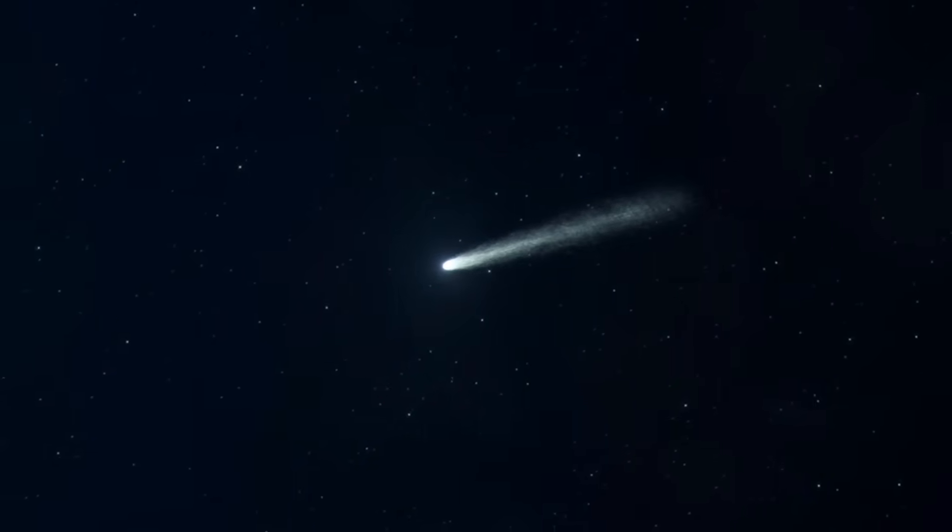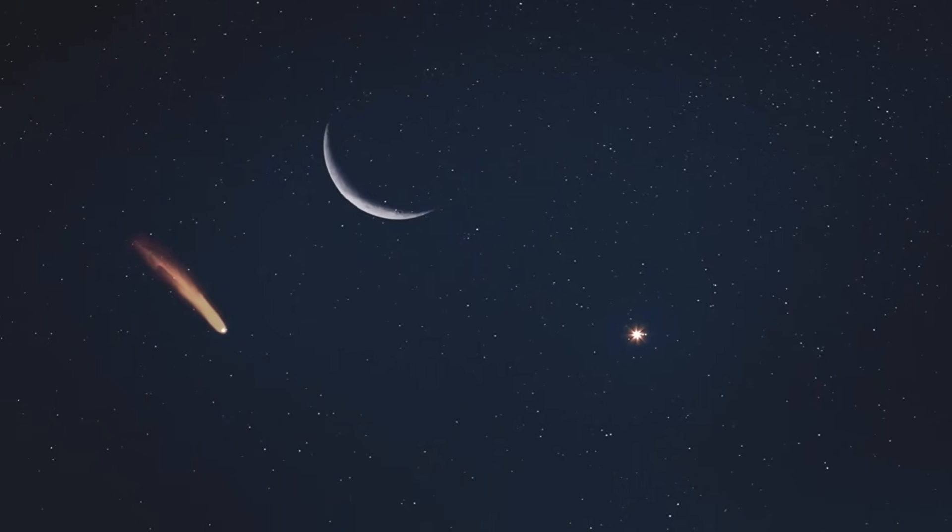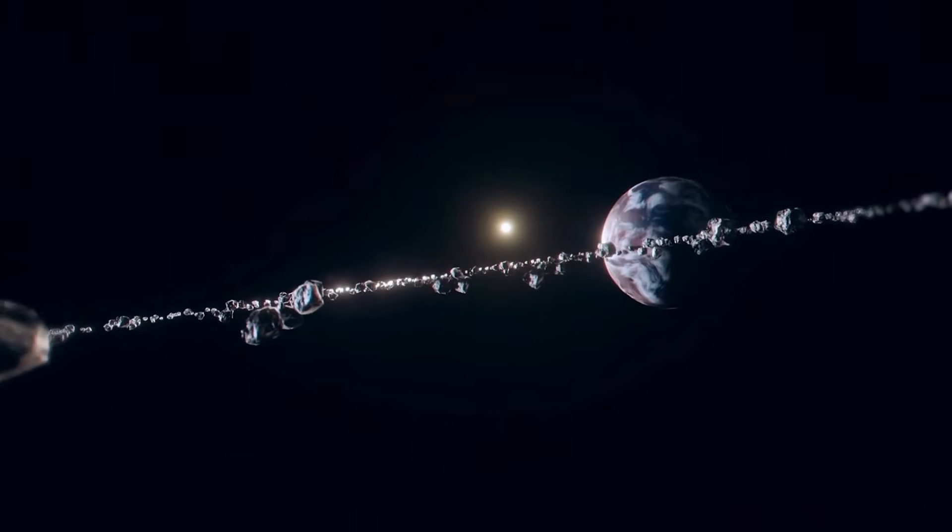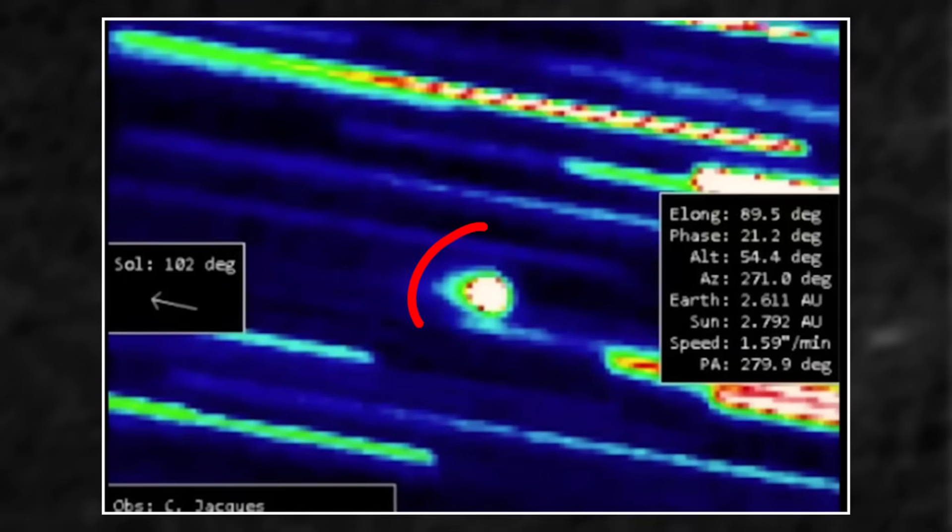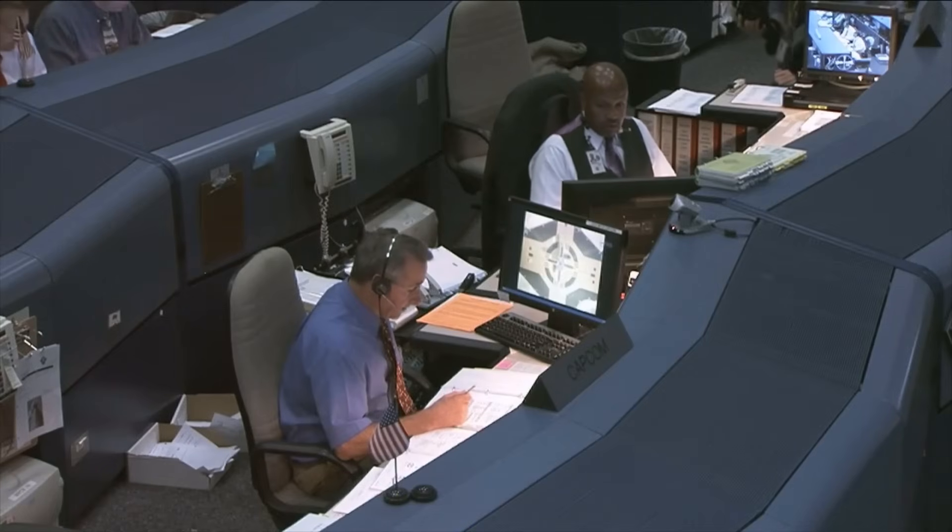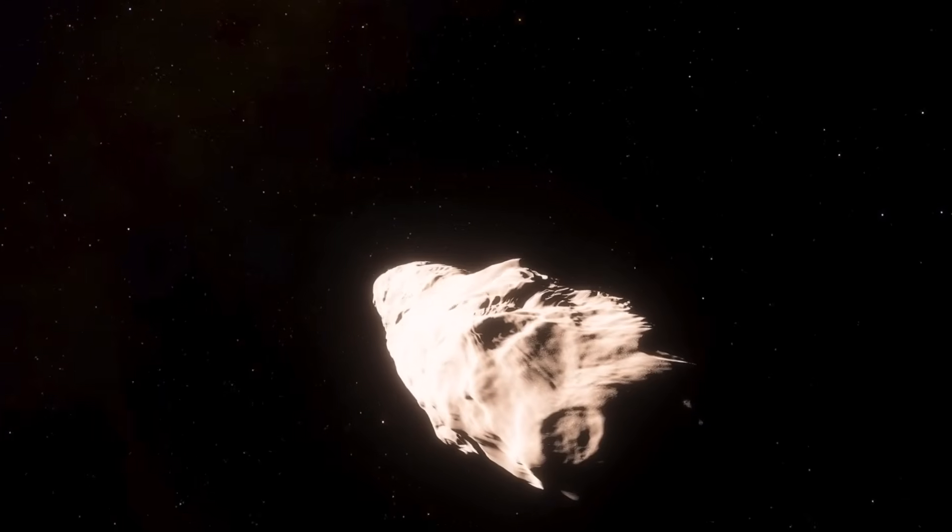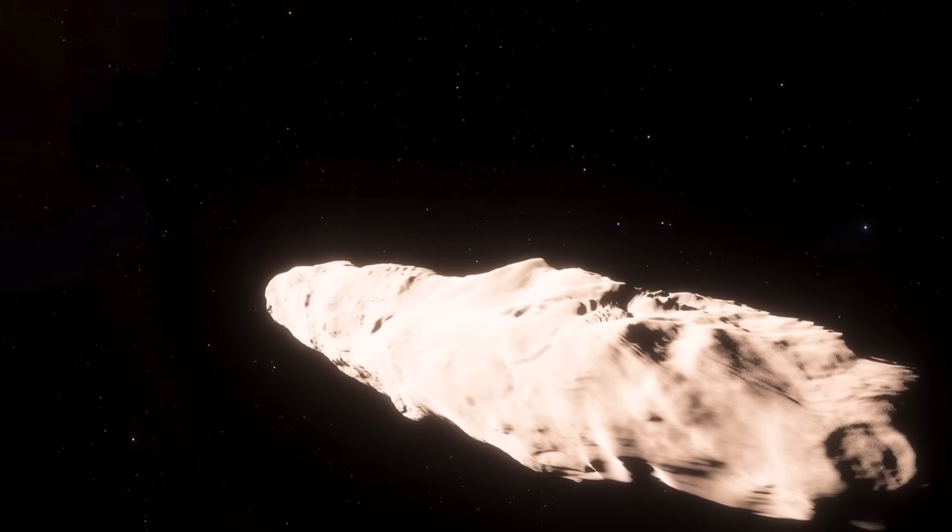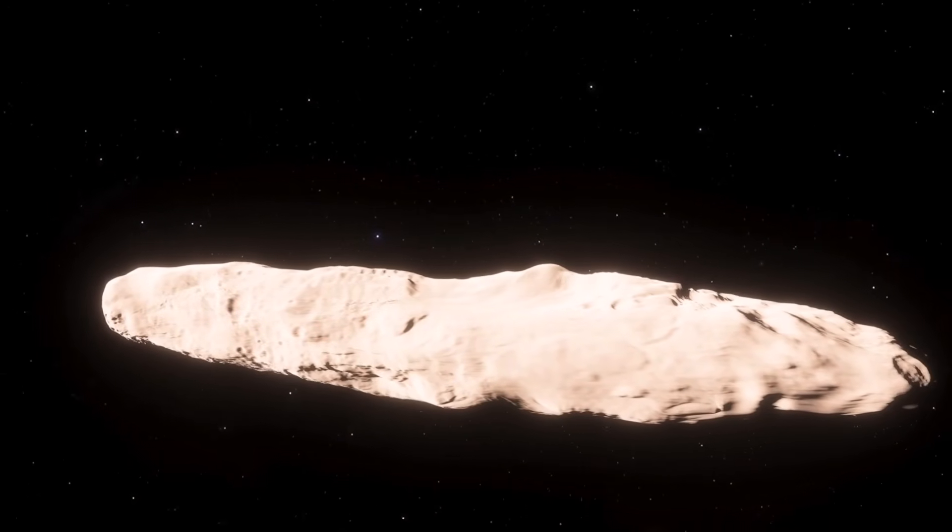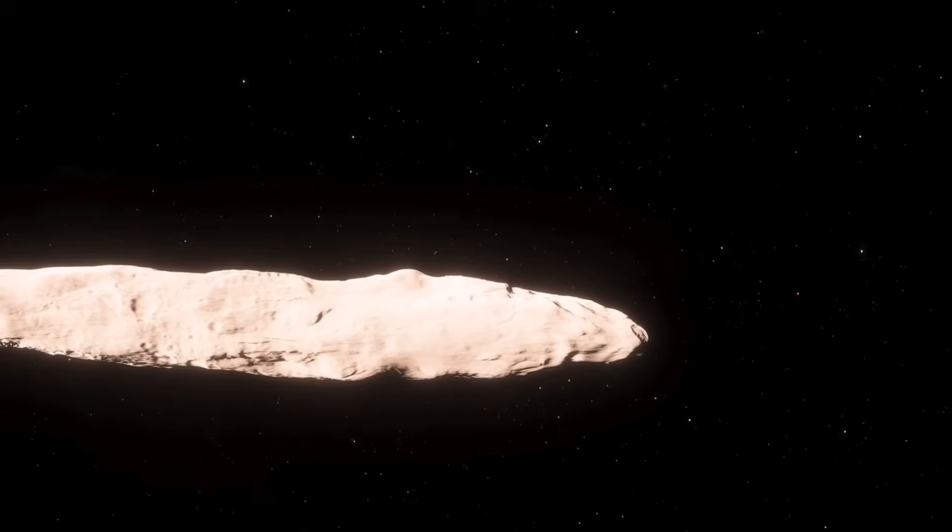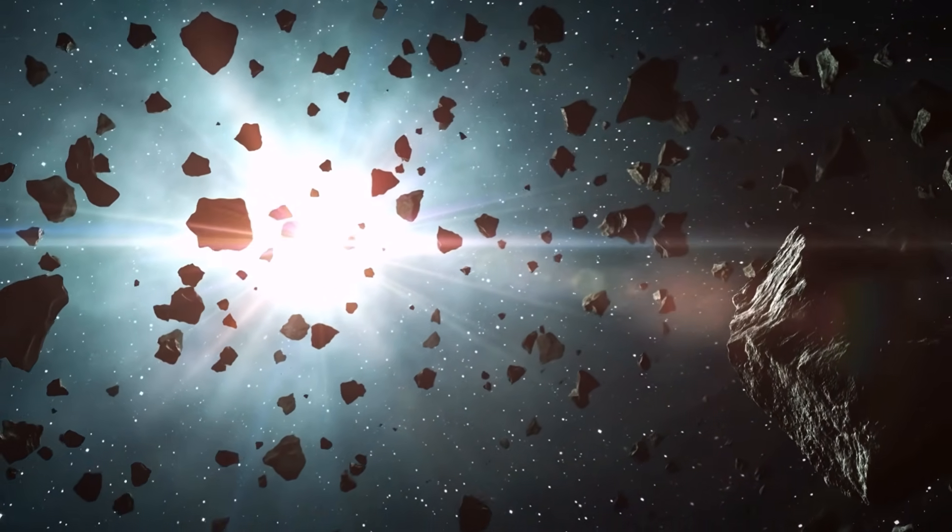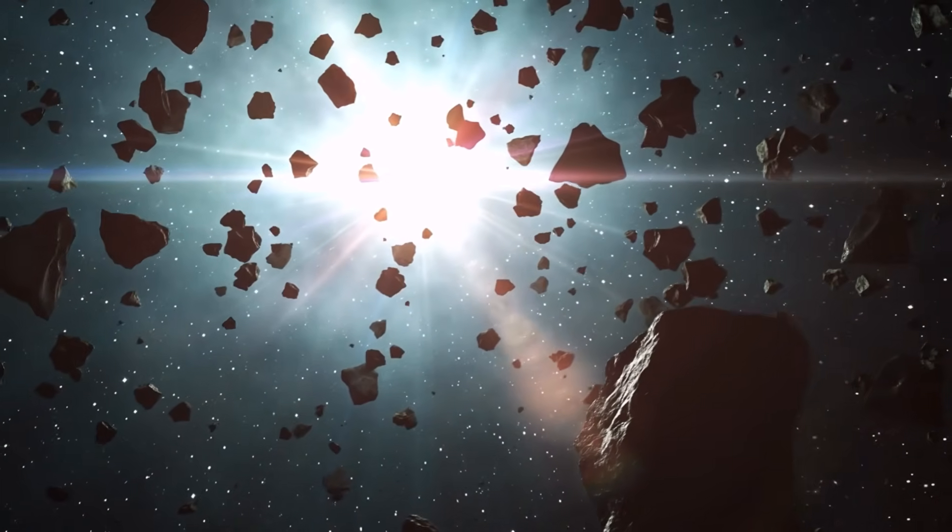Oumuamua was small, only about 100 meters long, roughly the size of a football field. It was dark, tumbling and incredibly strange. It shot through our system, gave us a brief, baffling glance, and then disappeared forever. It was a ghost. A whisper from the galaxy. 3i Atlas is not a whisper. It's a roar. Current estimates place its size between 1 and 15 kilometers wide. Let me be clear, this is not another Oumuamua. It is 10 to 100 times larger.